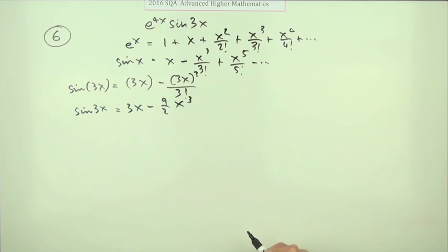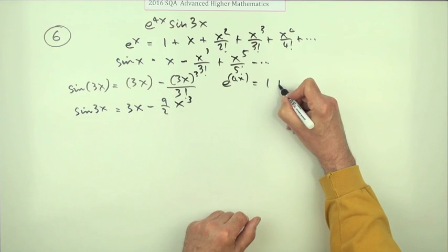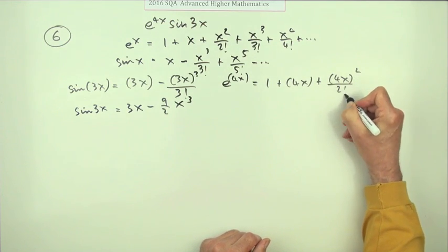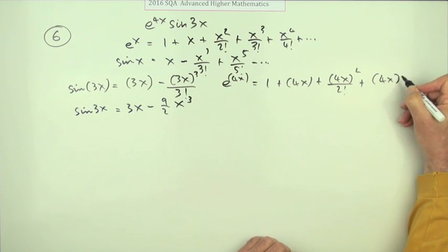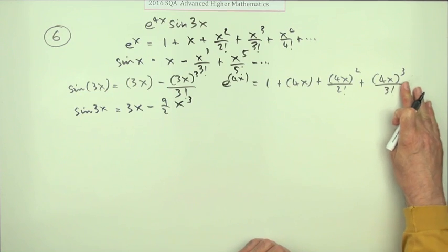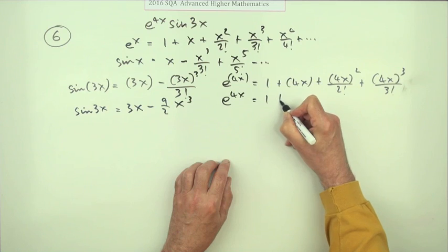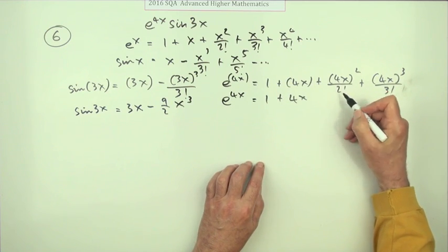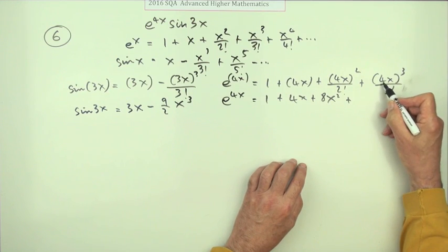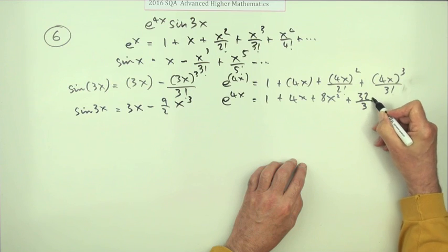For e to the 4x, substituting 4x in for x: 1 plus 4x plus (4x) squared over 2 factorial plus (4x) cubed over 3 factorial - and we stop there since we only want up to x cubed. Tidying that up: 1 plus 4x, then 16 over 2 is 8x squared, and 64 over 6 is 32 upon 3, giving us 1 plus 4x plus 8x squared plus 32/3 x cubed.